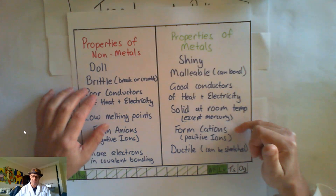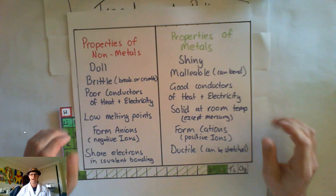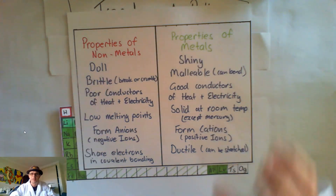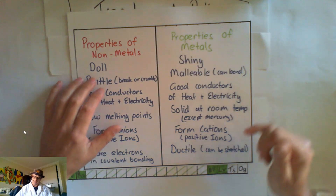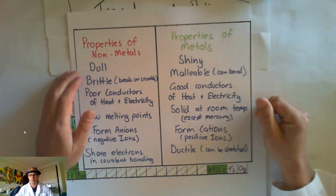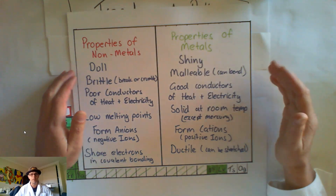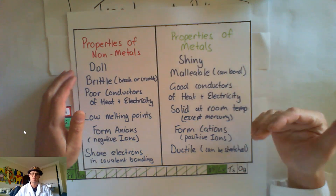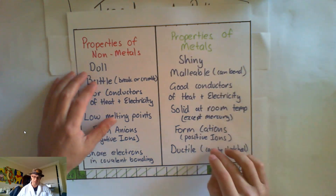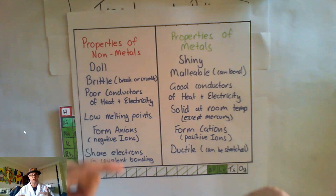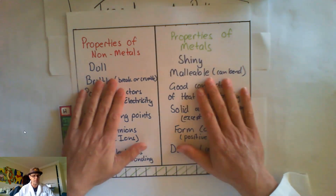Metals form cations, which are positive ions. They're ductile, which means they can be stretched, which is why all of our power lines and wiring within our houses are made from metals — one, because they're good conductors of heat and electricity, and two, because they're ductile and can be stretched and made into wires. So those are our properties of metals and non-metals.